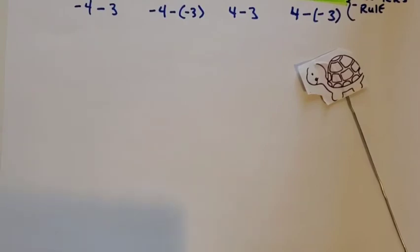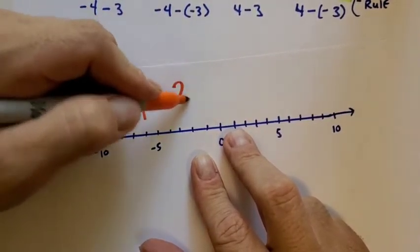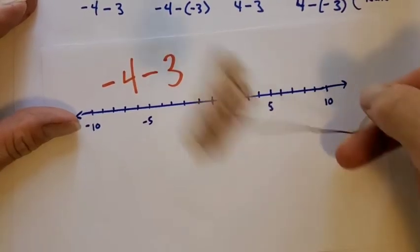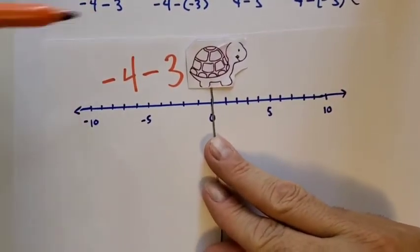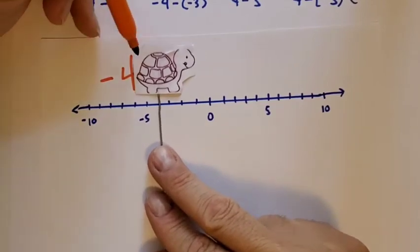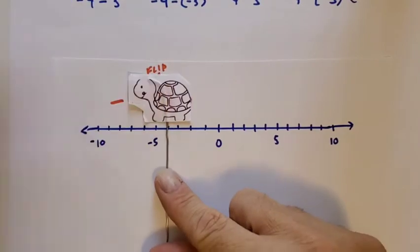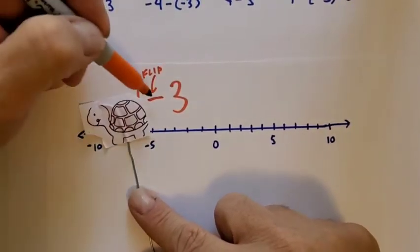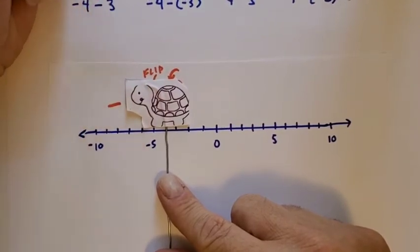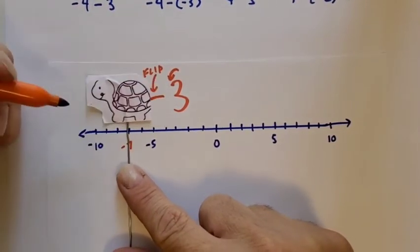Alright, we'll keep Trini around and do the next one: negative 4 take away 3. Starting at 0, we're going to go in a backward direction 4 steps: 1, 2, 3, 4. Now we flip — the subtraction sign means change direction. So we flip Trini. Now it says go forward 3, because that's a positive 3. So: 1, 2, 3. We're at negative 7. So negative 4 take away 3 is negative 7.